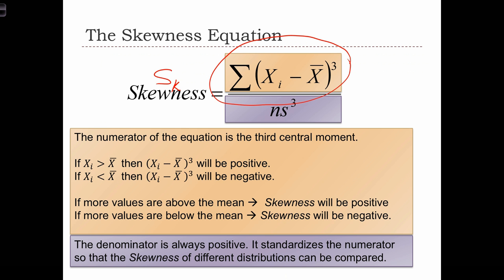The skewness statistic is the sum of the cubed deviations divided by n, which is the sample size, times s, which is the standard deviation, and we're going to cube the standard deviation.